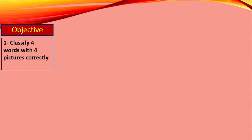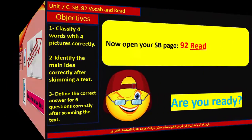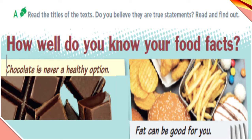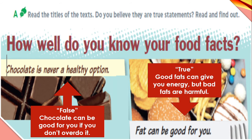Move to our first objective: classify four words with four pictures correctly. Are you ready? Read the title of the text — 'How well do you know your food facts?' Read the statements: 'Chocolate is never a healthy option' — what do you think? That's the opposite of what we know. This one is false — chocolate can be good for you if you don't overdo it. And 'fat can be good for you' — this one is true. Good fats can give you energy, but bad fats are harmful — so we have two kinds of fats.